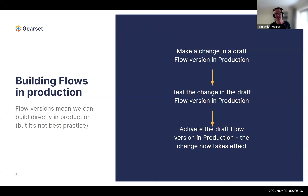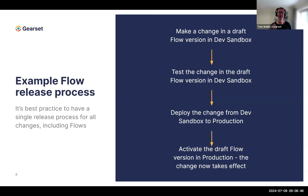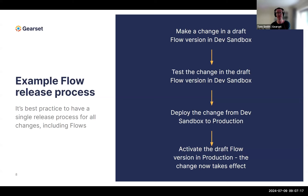We still want to avoid working directly in production because we have other metadata — lightning pages, custom fields, permissions. We want a single release process for all of that. A single process is easier for onboarding team members and helps with audit trails and compliance. The recommended approach is to create a draft version in your dev sandbox, test it there, deploy to production as you would any metadata, and then activate that version in production.